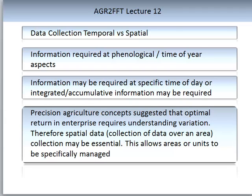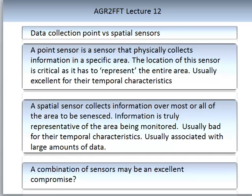Spatial data is the collection of data over an area and may be essential to interpretation. You need to specifically manage the area units. A point sensor physically collects information at a specific location — the location is critical as it represents the entire area, and it is usually excellent for temporal characteristics. An example is a soil sensor that goes into the ground at a specific point and represents a larger area.